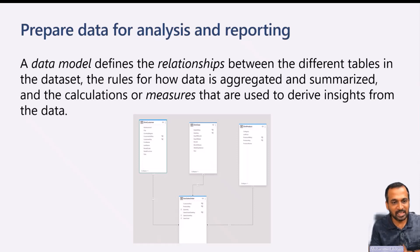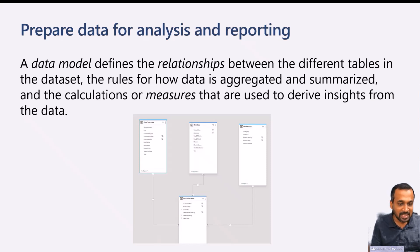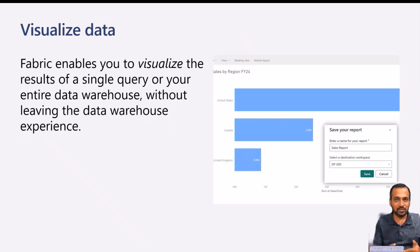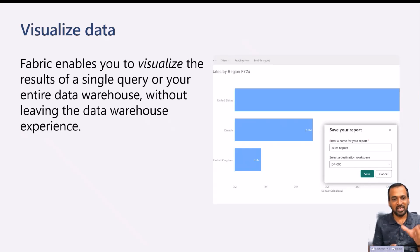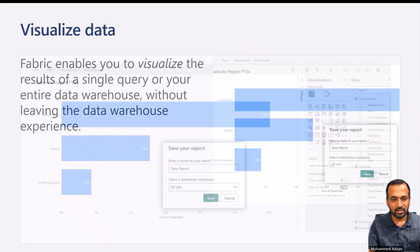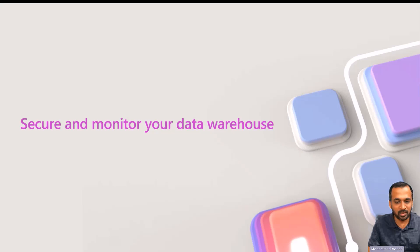Preparing data for analysis and reporting. A data model defines the relationships between different table sets in the dataset, the rules for how data is aggregated and summarized, and the calculations and measures used to derive from the data. Every lakehouse comes with a default semantic layer dataset, and you can also access the SQL endpoint. For the warehouse, you get a warehouse plus a default semantic dataset. From the default semantic model, you can connect and build your Power BI report, though it is recommended to create a new semantic model and then build your Power BI report out of that.